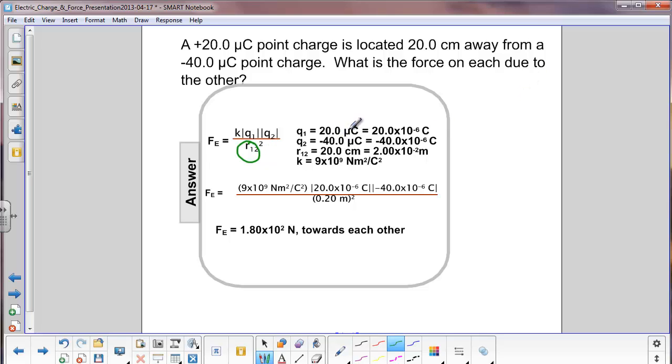First thing we have to do is convert this microcoulomb notation to exponent notation. So micro is 10 to the minus 6, and we also have to convert centimeters to meters. So 100 centimeters in 1 meter, so we get 2 times 10 to the minus 2 meters.